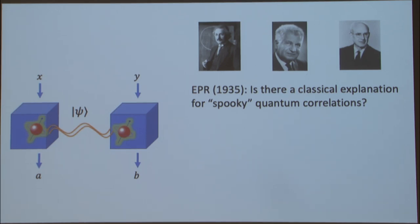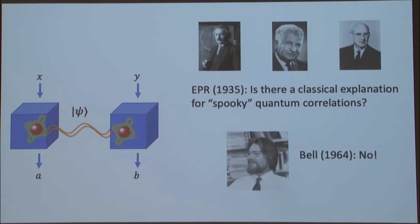Back in the 1930s, right here at IAS, Einstein, Podolsky, and Rosen were thinking about the types of correlations arising from quantum mechanics. Einstein was famously very bothered by them and called them spooky. At the time, they hoped there might be a classical explanation. But 30 years later, John Bell gave a powerful answer, showing there is no classical explanation for these spooky correlations through a thought experiment.